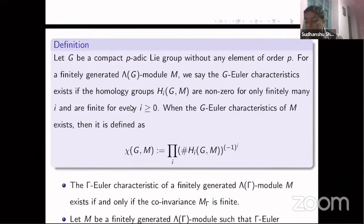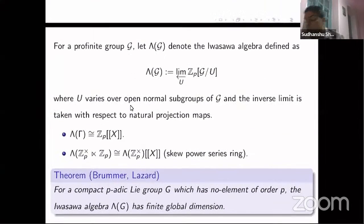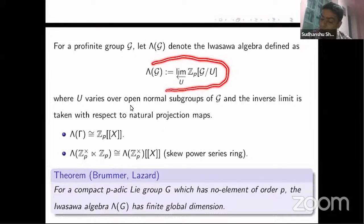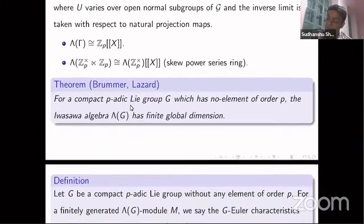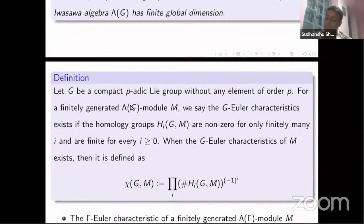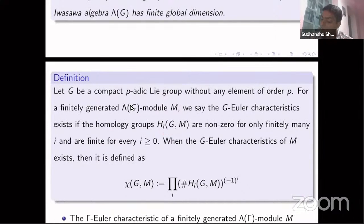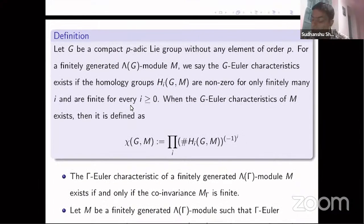Let me now define the Euler characteristic, which appears in the title. Let G be a compact p-adic Lie group with no element of order p, and let M be a finitely generated lambda(G)-module. We say that the Euler characteristic of M exists if the homology groups H_i(G, M) are all finite and vanish for i large enough.